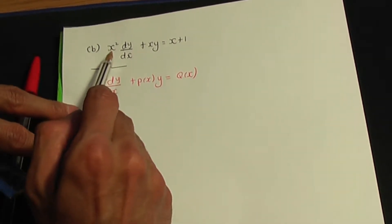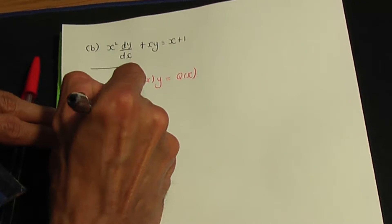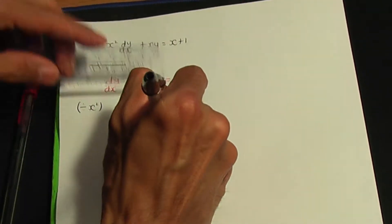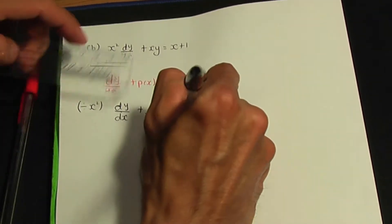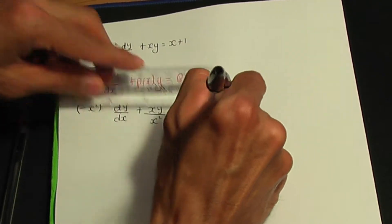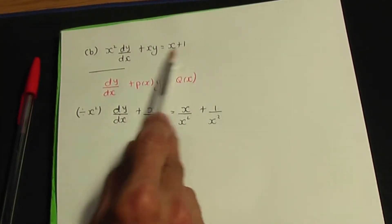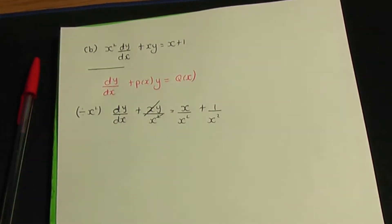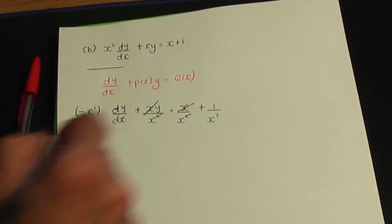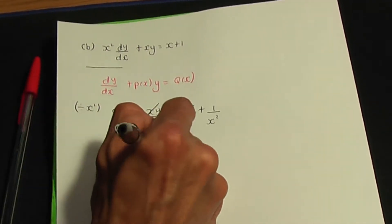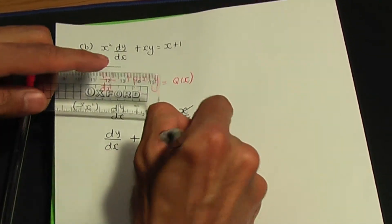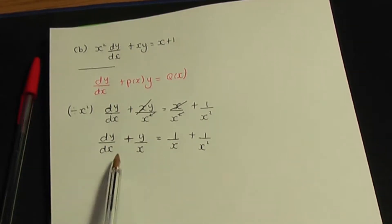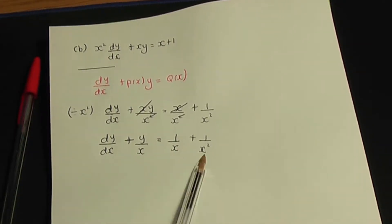I'm going to divide throughout by x squared. So if I divide throughout by x squared, we're going to have dy/dx plus xy divided by x squared, and that is equal to x over x squared plus 1 over x squared. We can make some cancellations, giving us dy over dx plus y over x equals 1 over x plus 1 over x squared. As you can see, this equation is a first order linear differential equation.